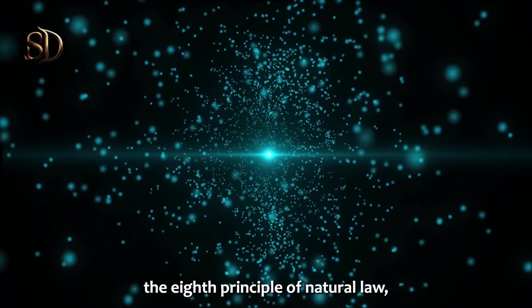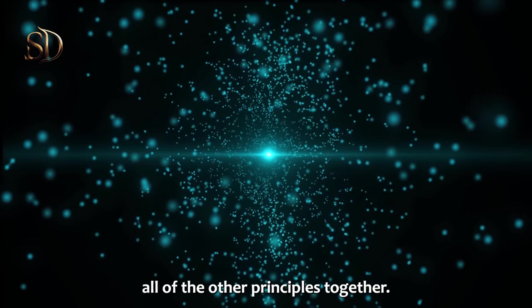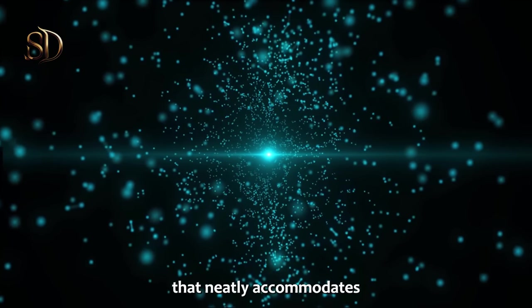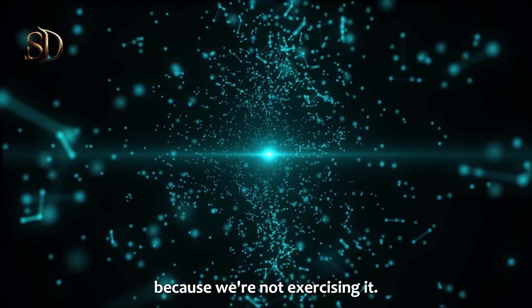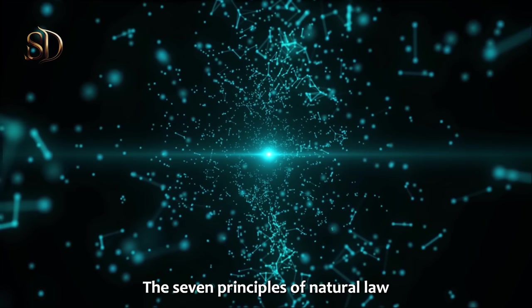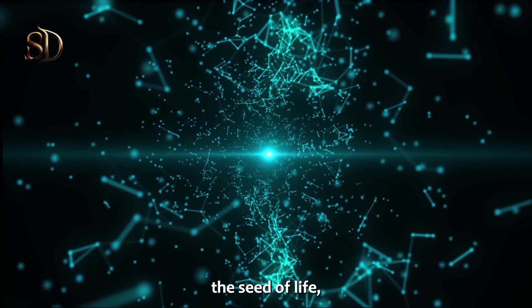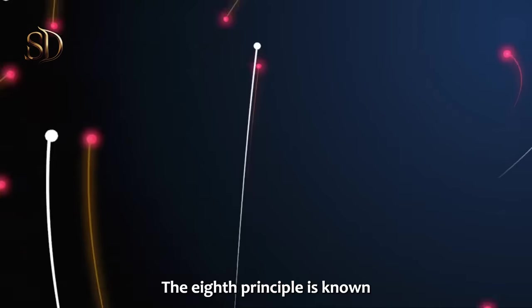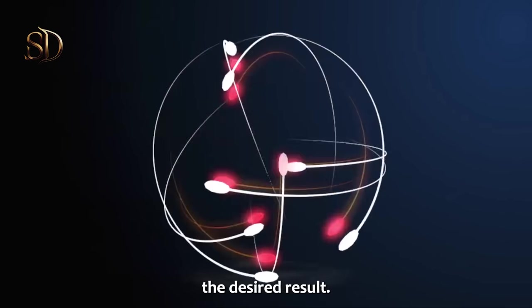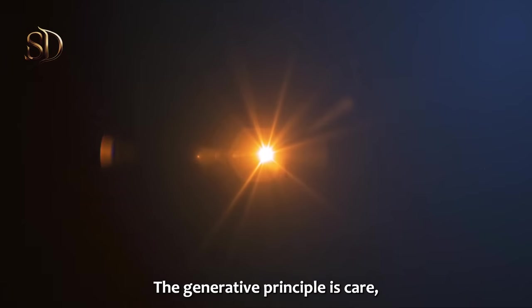Now, let's discuss the eighth principle of natural law, which I refer to as the lost principle. It is the principle that binds all of the other principles together, the container that neatly accommodates all the other principles. Unfortunately, it's lost because we're not exercising it. The seven principles of natural law are represented by seven overlapping circles. The eighth circle, the seed of life, represents the lost principle. The eighth principle is known as the generative principle, the factor that generates the desired result. It's the causal force that creates something from a seed. The generative principle is care, not love or compassion.